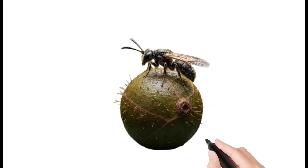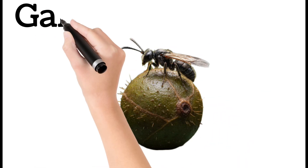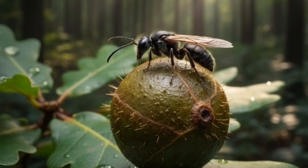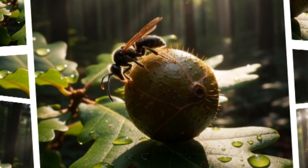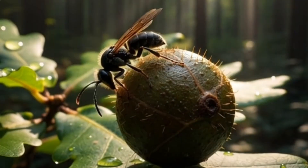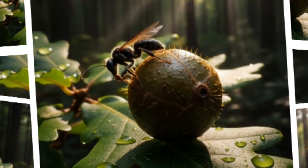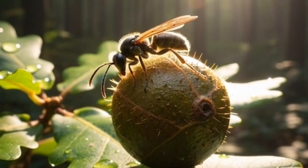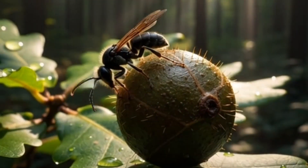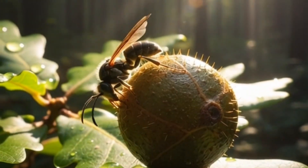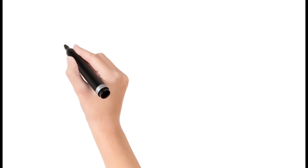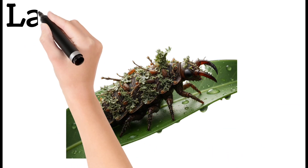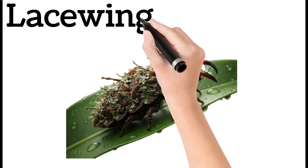Next, gall wasp: forms galls on plants. Galls look like bumps on leaves.